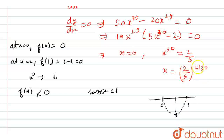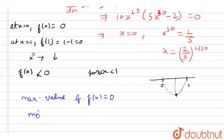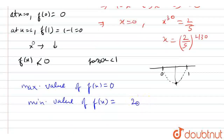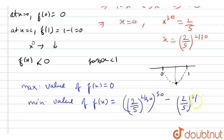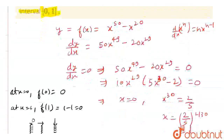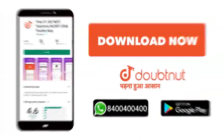The critical point is x equals (2/5) raised to the power 1/30. The maximum value of f(x) is 0, and the minimum value is found by putting x equals (2/5)^(1/30) into f(x), giving us (2/5)^(1/30) raised to the power 50 minus (2/5)^(1/30) raised to the power 20, which simplifies to (2/5) raised to the power 5/3 minus (2/5) raised to the power 2/3. This is the minimum value and 0 is the maximum value. Thank you.